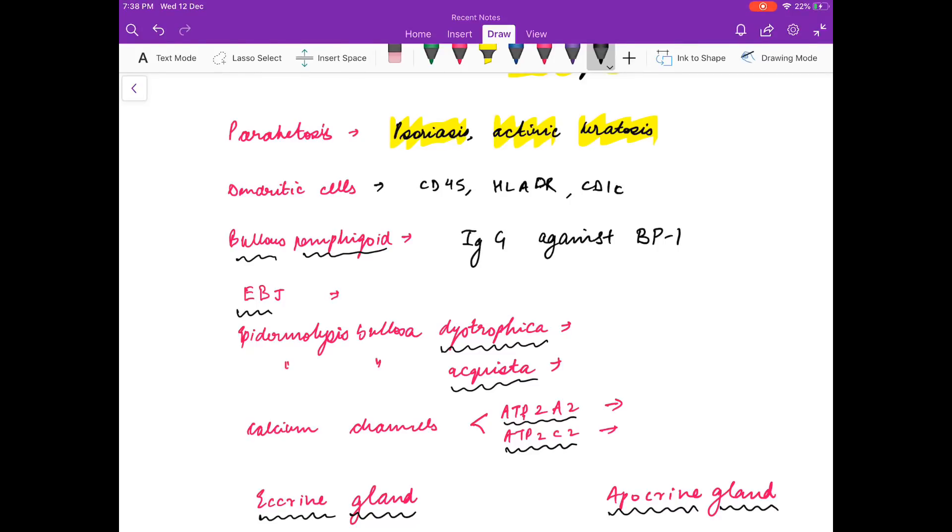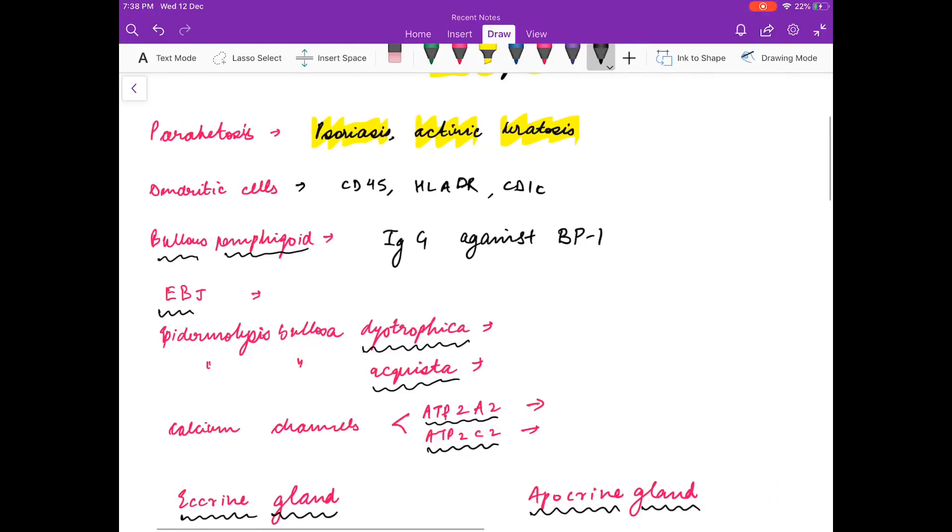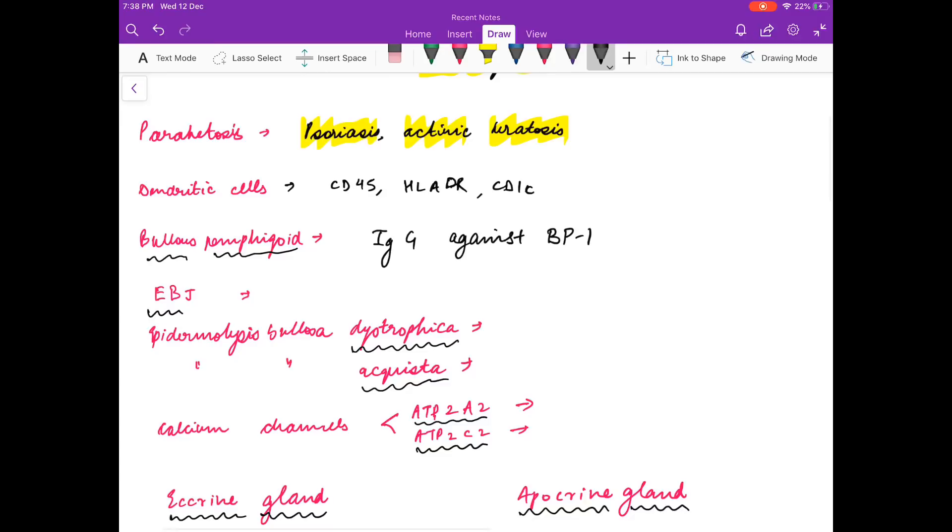What are the antibodies in bullous pemphigoid? These are IgG antibodies against BP1 and BP2. Antibodies against BP2 is seen in cicatricial pemphigoid.